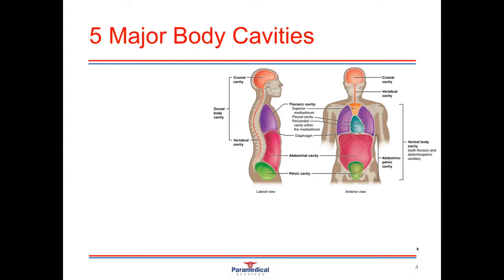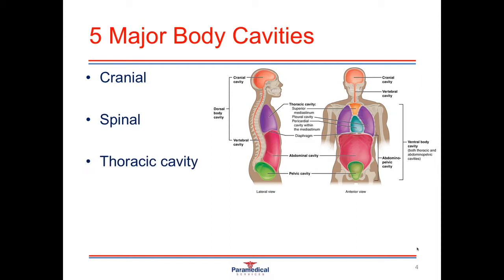The different body regions can be further divided down into body cavities. Today we're going to look at five of the major body cavities. A cavity needs to be an enclosed space, so most of the major body cavities are either encased by bone or by membranes. The first major body cavity is the cranial cavity, which encases the brain and then continues down to the spinal cavity, which encases the spinal cord. The thoracic cavity encases both the lungs, the heart, and the great vessels.